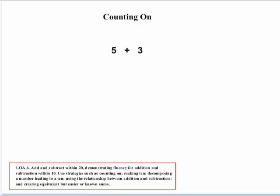For example, take 5 plus 3. You would want kids to have some type of manipulative to work with. The kids would start with 5 and then count on — one more would be 6, then 7, then 8. So just counting on, they'd start with 5 and count up to 8.